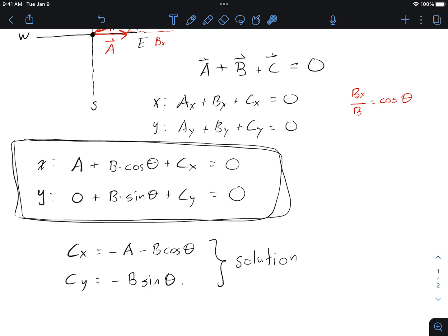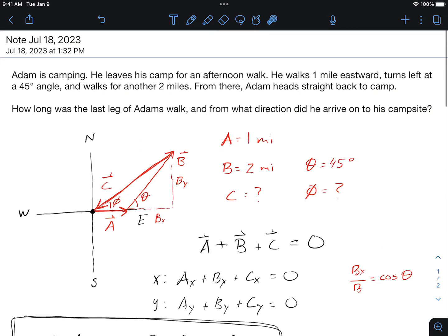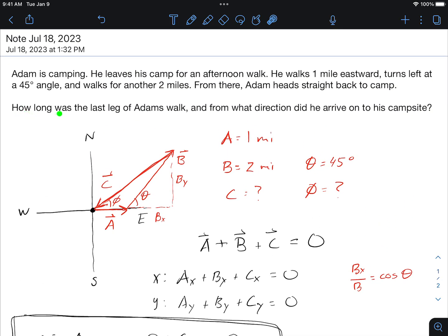Now notice I haven't even thought about what the question of the problem was. I can go back now and read the question. It says how long was the last length of Adam's walk and from what direction did he arrive? So they're not really asking me for cx and cy. They're asking me for the length of the vector and the angle phi.